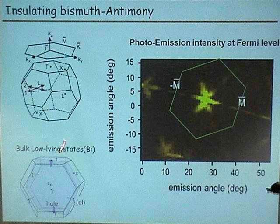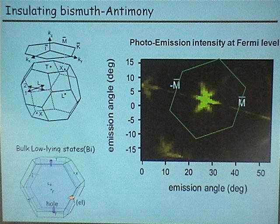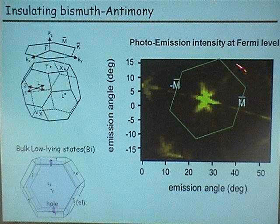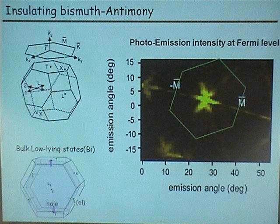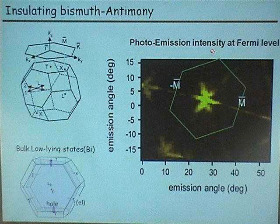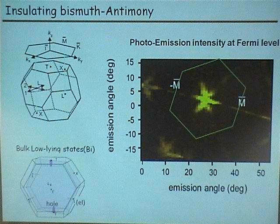Bismuth has two pockets: one electron pocket at the L point and a hole pocket at the T point. When going from bismuth to antimony, these pockets open up a gap. Considering the projection of the 3D Brillouin zone along the 111 axis, this is the projected surface Brillouin zone. Gamma-bar, K-bar, and M-bar are the high symmetry points. Only M-bar is a time-reversal invariant point. If we look at the photoemission intensity at the Fermi level, we see a nice k-space periodicity and a star map.